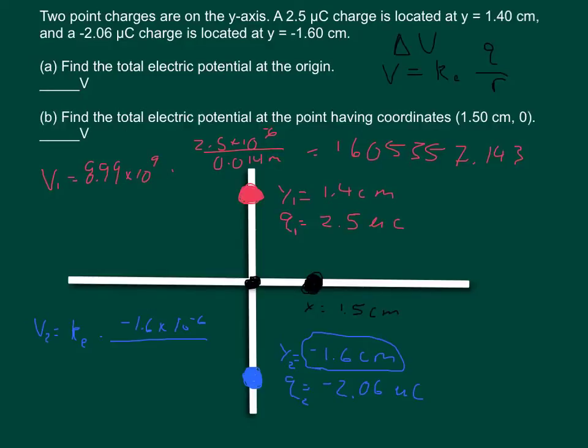that doesn't matter. The negative sign doesn't matter because we don't need to know what direction because it's a scalar quantity. We just need to know the magnitude of the distance, and so we can put that it's 0.016 meters. So you multiply that out.